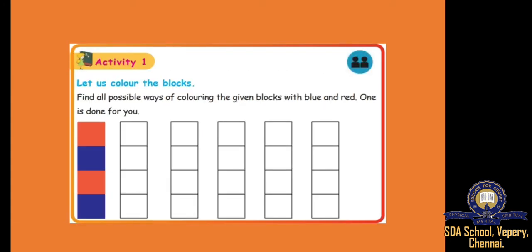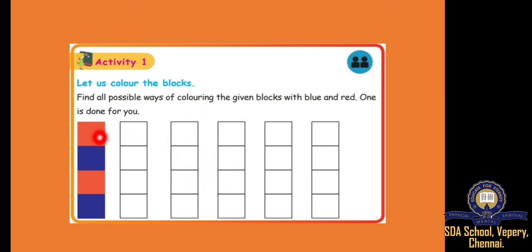See the next one — this is coloring. You can do it very nicely. Here red, blue, red, blue. So you have to find all the possible ways of coloring using only red and blue, and you have to color differently — this pattern should not repeat. Next one you color blue, red, blue, red. And the next one blue, blue, red, red. Next one red, red, blue, blue.